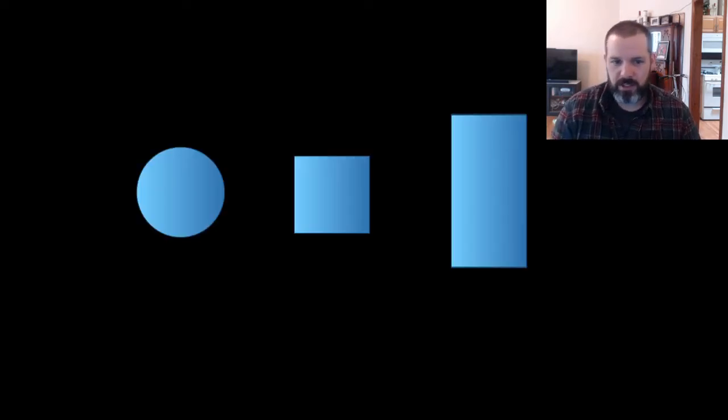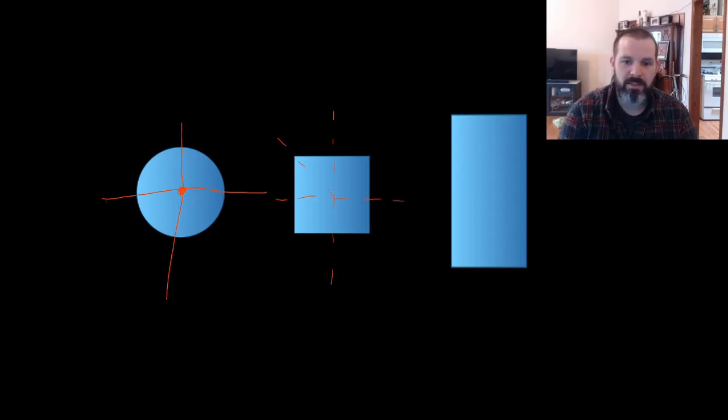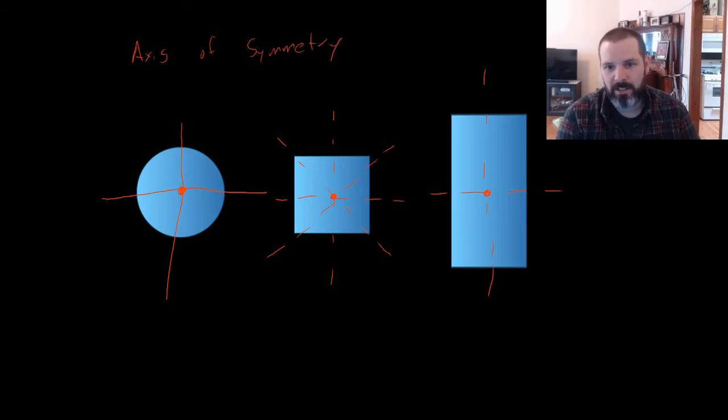Now, for symmetric elements like a circle or a square or a rectangle, the centroid is easy to find. A circle is infinitely symmetric and the centroid is located at the center. A perfect square has one, two, three, four axes of symmetry and its centroid is also located in the middle. A rectangle only has two axes of symmetry. Its centroid is also in the middle. Wherever you have an axis of symmetry, the centroid will be located on it.